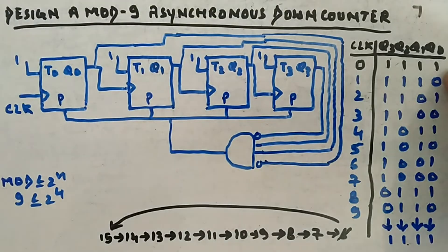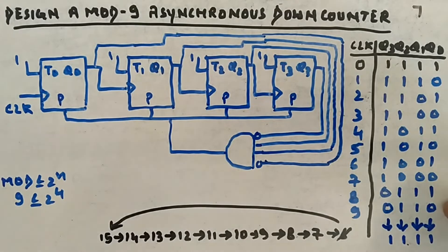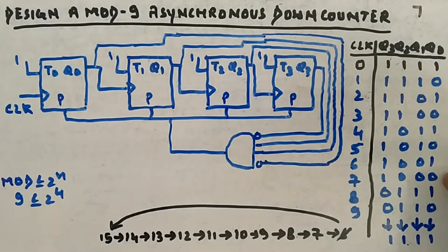At the first clock it's a down counter, so 15, then 14, 13, 12, 11, 10, 9, 8, 7, 6. As soon as 6 comes it will return to 1,1,1,1 again, because we need a total of 9 states.